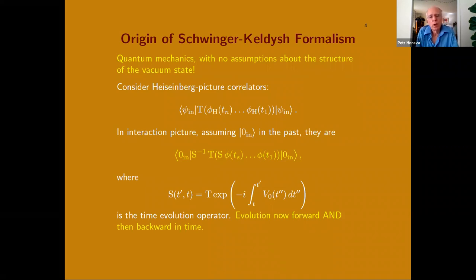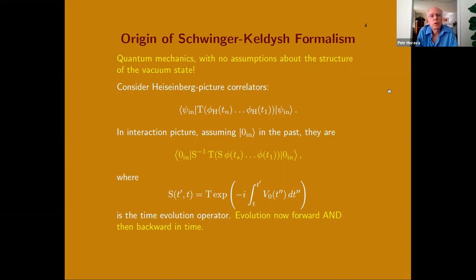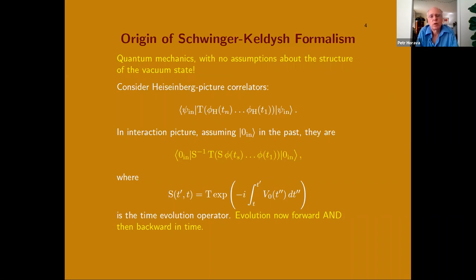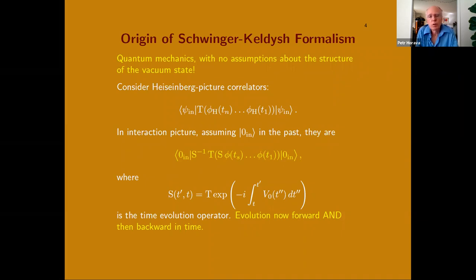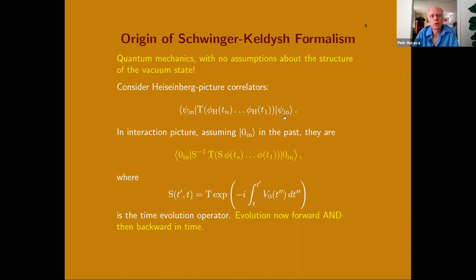If you look at non-string-theory quantum mechanics or any other quantum systems people have studied, there is a fully non-equilibrium formulation of quantum mechanics available which goes beyond what we typically teach in relativistic quantum field theory. It's known as the Schwinger-Keldysh formalism. The formalism can be motivated by considering Heisenberg picture correlators of some fields in some many-body system — could be relativistic or non-relativistic — and instead of evaluating the time-ordered product in the vacuum expectation value, let me put it in some arbitrary state.